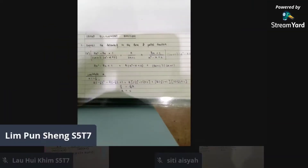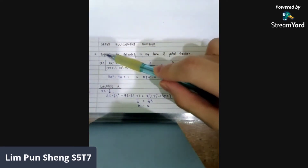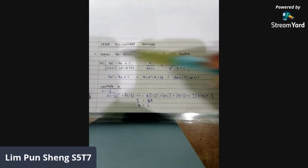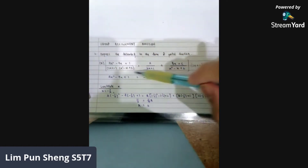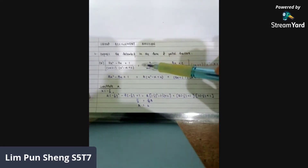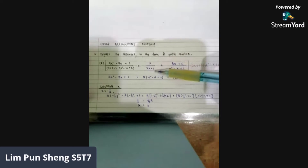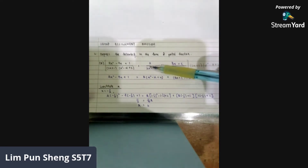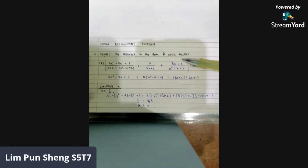All right. I'll begin our discussion with question 2a. The question says: express the following in the form of partial fractions. Question 2a is given a fraction with a linear factor and a quadratic factor in the denominator. So the first step, we split it into two fractions — one with the linear factor denominator, and another with the quadratic factor. Based on the formula, the linear factor uses constant a, and for the quadratic factor, we use bx plus c.